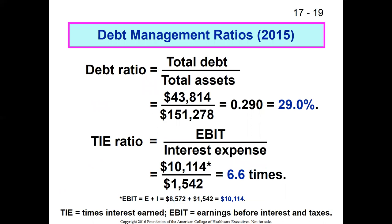Next are debt management ratios. One reason ROE may be lower than average is that the debt ratio might be lower than average — they're using more equity than the typical hospital. The debt ratio shows how much debt we have relative to assets. Remember: total assets equals total debt plus equity. If the organization has 29% debt, then they have 71% equity, while the industry average is 43% debt. So this organization is more equity-financed than peers.